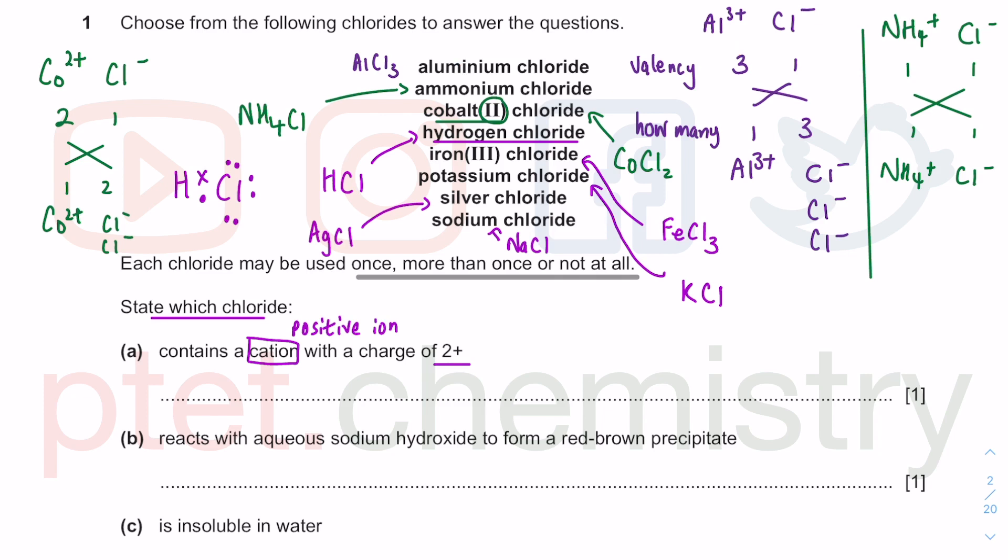Looking at these: aluminum is 3+, ammonium is NH4+, cobalt(II) is Co2+, hydrogen chloride is simple covalent, iron(III) - actually, you're not looking for 3+, you're looking for 2+. So it's got to be cobalt(II), because we want the 2+ ion. That's Co2+ ion, giving cobalt(II) chloride, CoCl2.